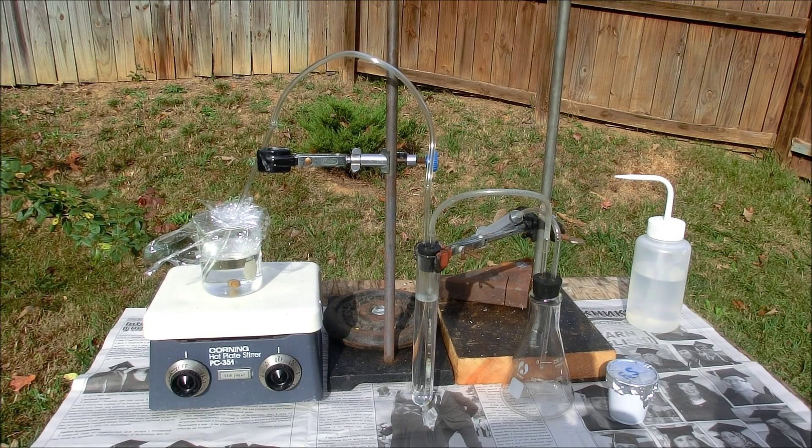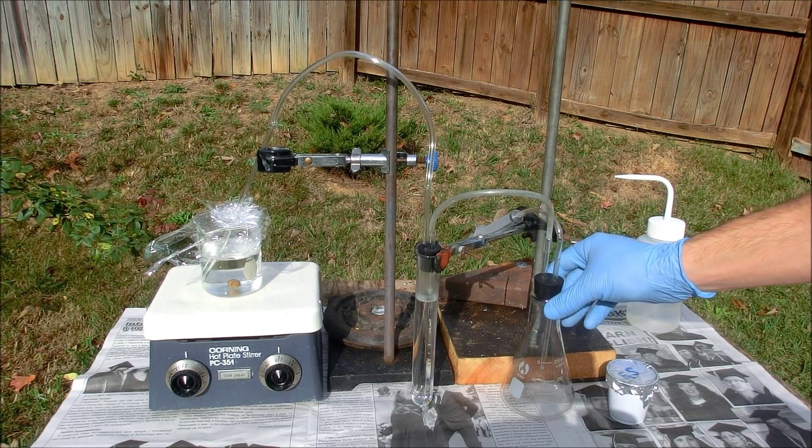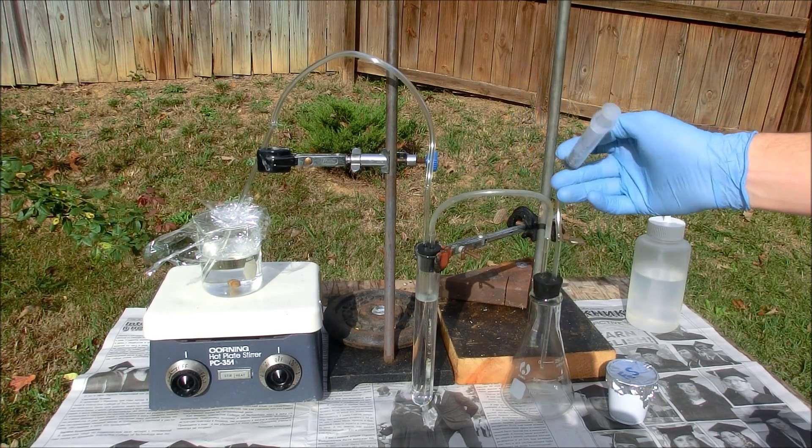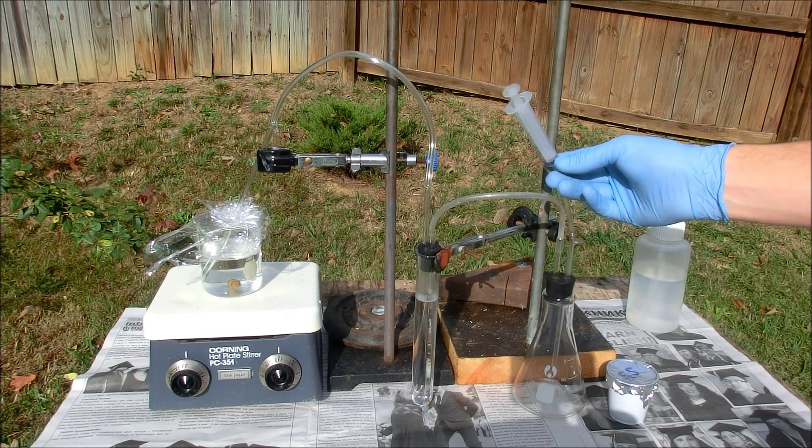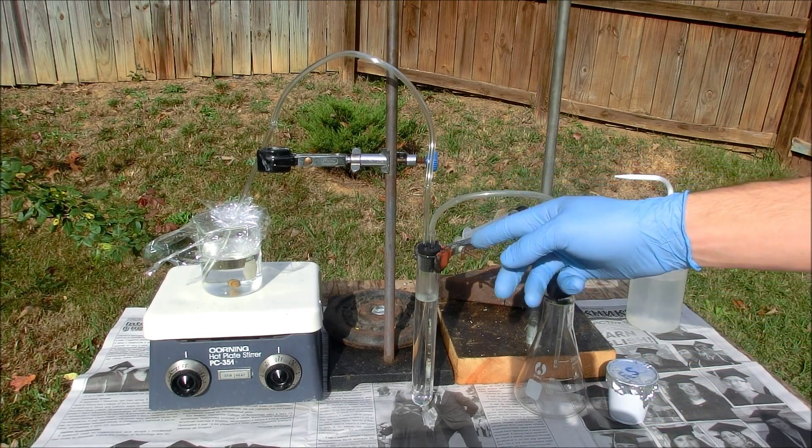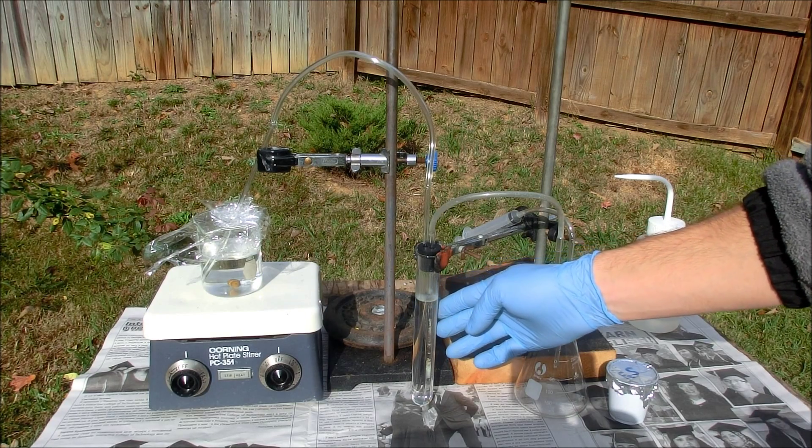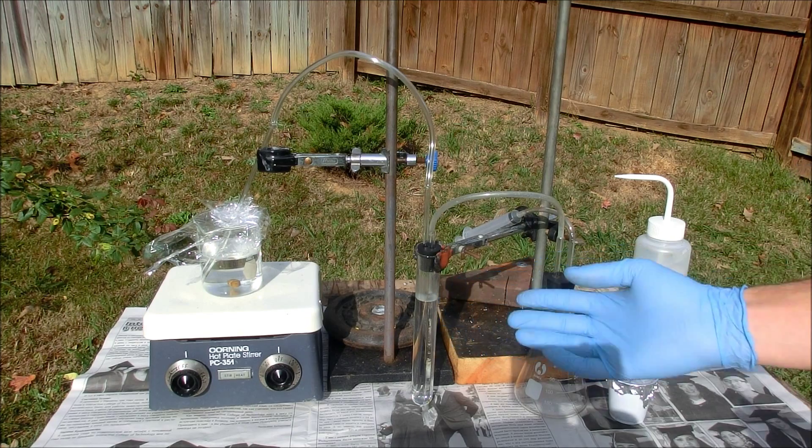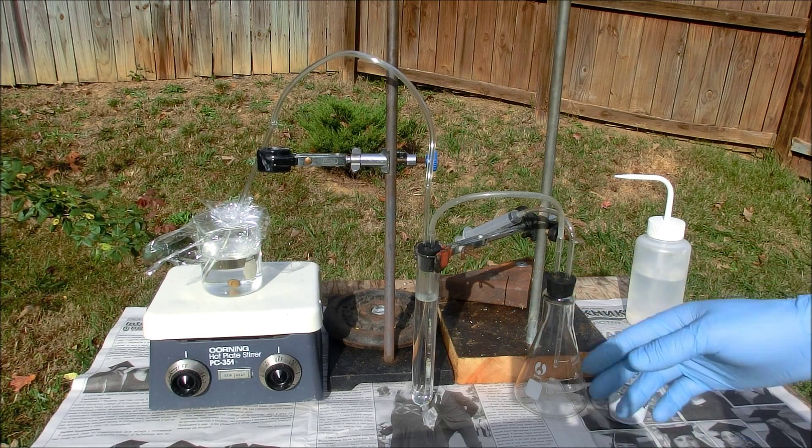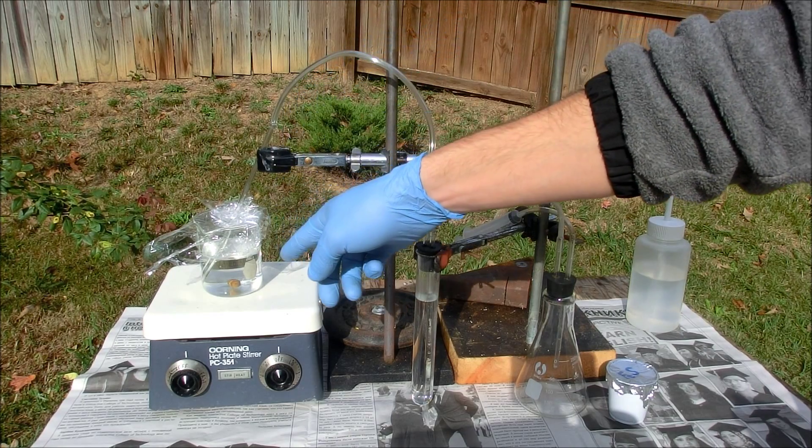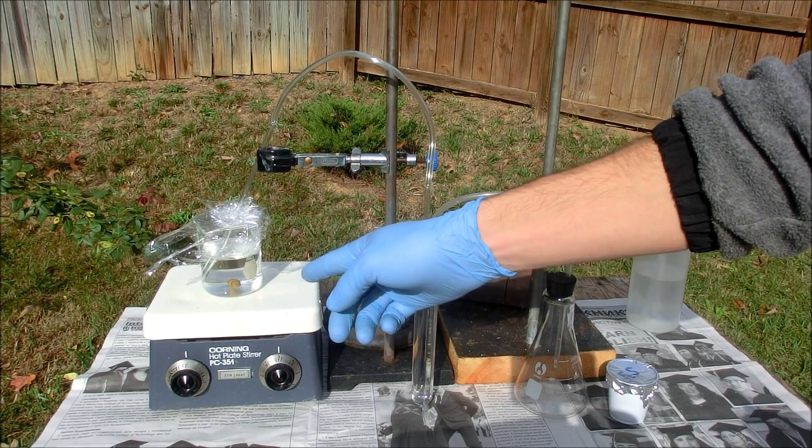So here's my gas generating setup. Here we have an Erlenmeyer flask to which we'll add the iron sulfide and then introduce hydrochloric acid through the syringe. That will make hydrogen sulfide gas which will travel through this tube to this stage which is just distilled water. It serves to wash the hydrogen sulfide gas of any HCl vapor or fumes. And then it will come up and go through this bubbler into our sulfate solution which I have a stir bar in and we'll be stirring while this is going on.